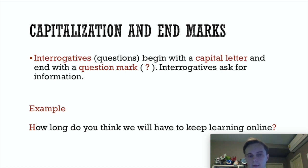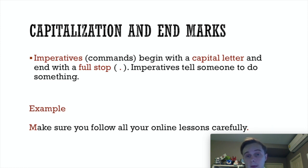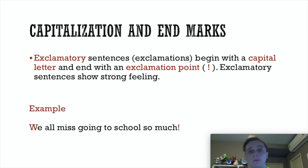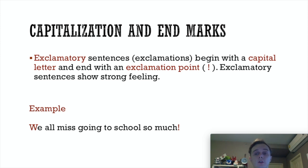Interrogative sentences ask for information. So for example: 'How long do you think we will have to keep learning online?' An imperative, known as a command, begins with a capital letter and ends with a full stop, and these sentences tell you to do something. For example: 'Make sure you follow all your online lessons carefully.' Exclamatory sentences, known as exclamations, start with a capital letter and end with an exclamation point, and these show strong feelings — if you're really happy, sad, if you love or hate something, if you're excited, scared, or worried. We use exclamatory sentences to describe them. For example: 'We all miss going to school so much!'